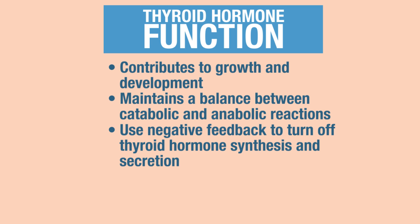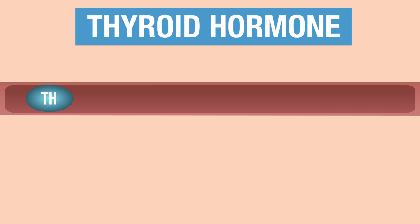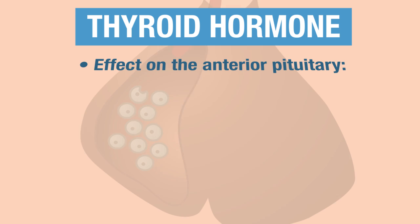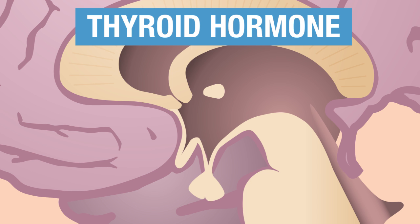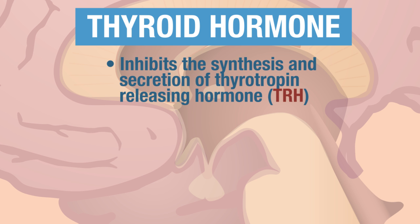Starting with thyroid hormone in circulation, it can have an inhibitory effect on the anterior pituitary by inhibiting the responsiveness to thyrotropin-releasing hormone. Thyroid hormone can also have an inhibitory effect on the hypothalamus, and when it binds to receptors within the hypothalamus, it will inhibit the synthesis and secretion of thyrotropin-releasing hormone.